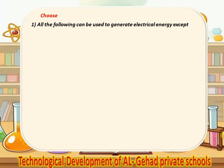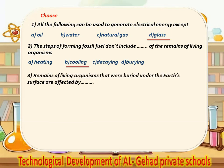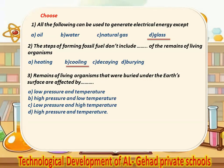Number 7, choose the correct answer. Number 1, all the following can be used to generate electrical energy except glass. Number 2, the steps of forming fossil fuel don't include all the remains of living organisms. Number 3, the remains of living organisms that were buried under the earth's surface are affected by high pressure and temperature.